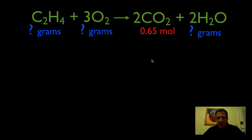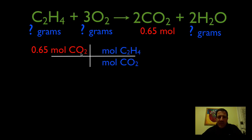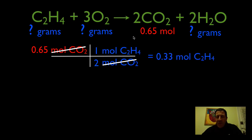Let's get started. The first thing we're always going to do is write down the moles of the substance we've been given. We want to get out of our moles of CO2 and into moles of ethylene. So we put moles of CO2 on the bottom and moles of ethylene on top. The molar ratio is 1 to 2, so we put the 2 on the bottom and the 1 on the top. Cancel our units, and we know that we need 0.33 moles of ethylene. This is step two — the molar ratio — converting from moles of CO2 to moles of C2H4.